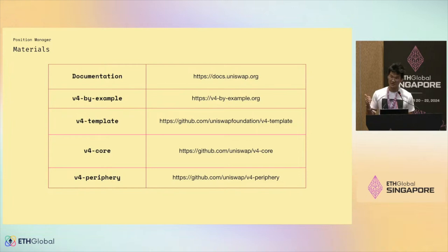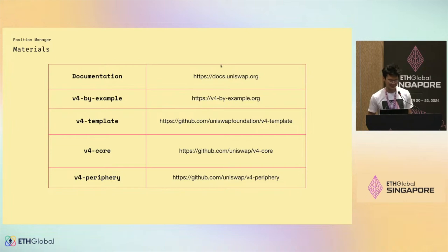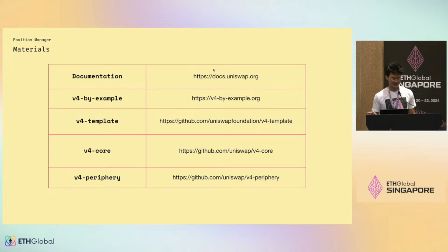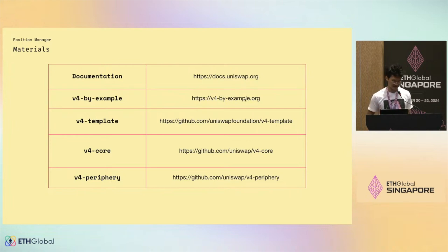Some materials you could look into: docs.uniswap.org — there is a pending PR. I didn't realize I didn't have merge access to the main repo, so I'm waiting for people in New York to wake up. But if you look on GitHub you'll find the PR with all the new v4 documentation. V4-by-example has a bunch of Solidity snippets, and of course we have the core contracts out.